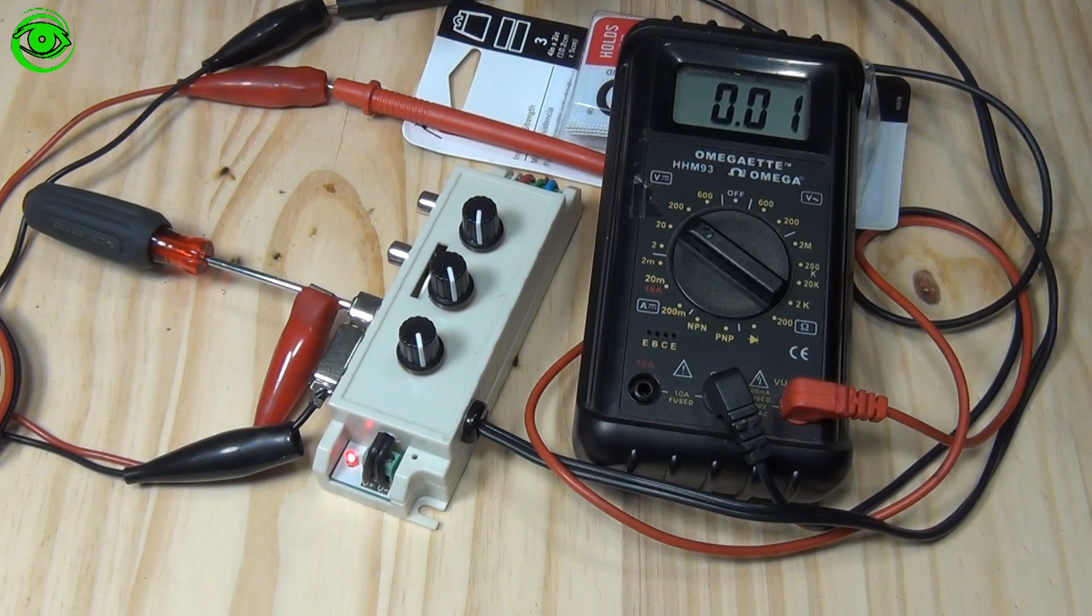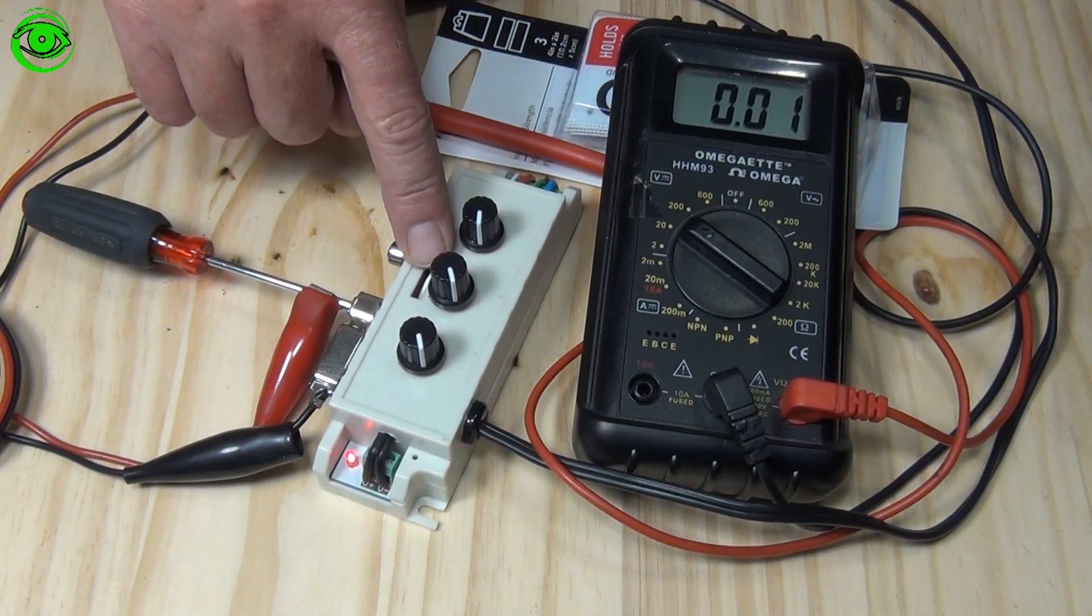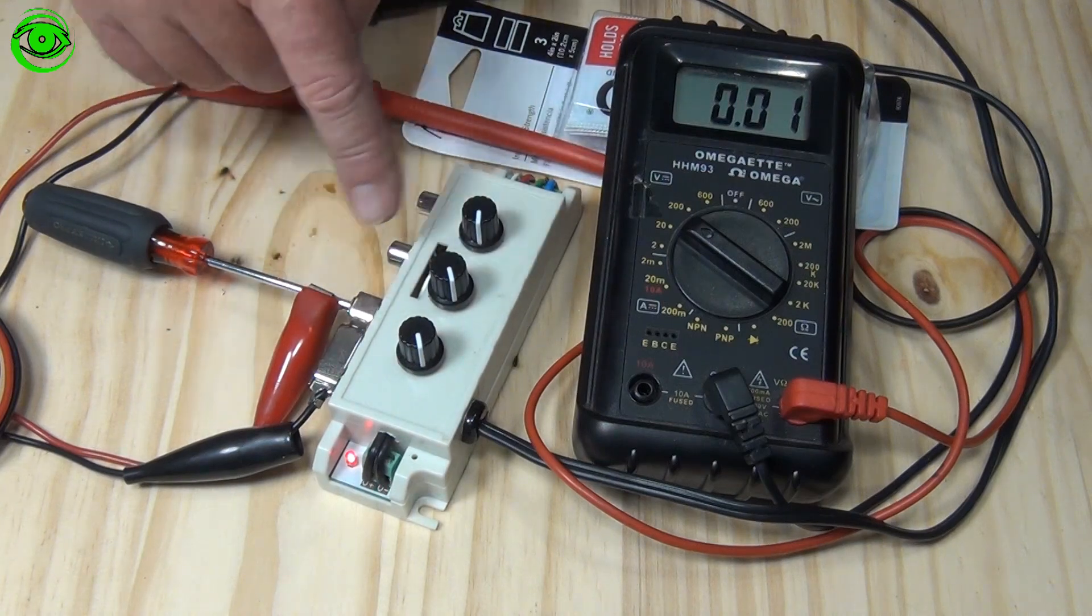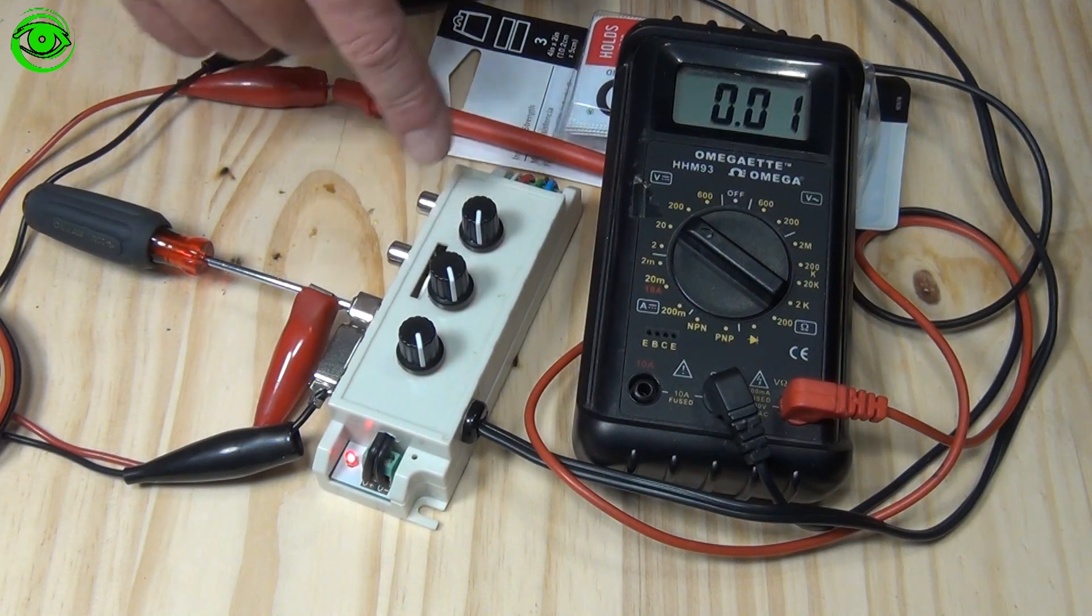This do-it-yourself dew heater controller was picked up on a site called DSLRmodifications.com and basically what it does is it takes an RGB dimmer which is this right here and it converts it into a dew heater project.